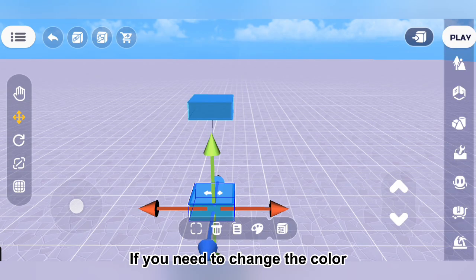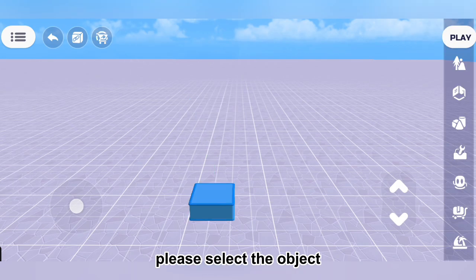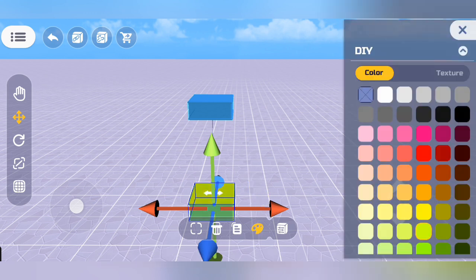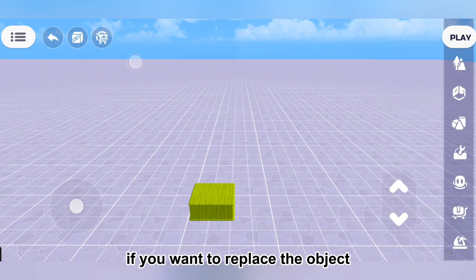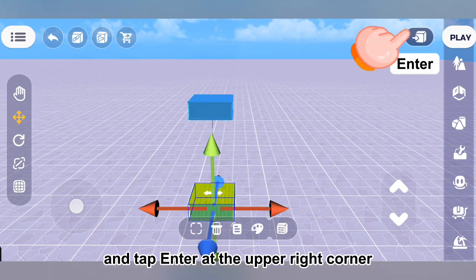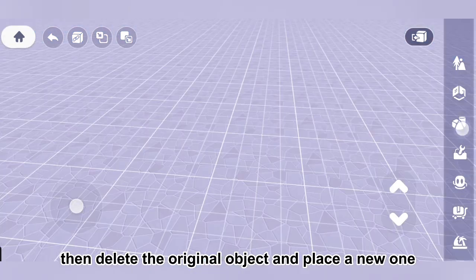If you need to change the color and texture of the object, please select the object and tap the palette icon below to choose. If you want to replace the object, please select it and tap enter at the upper right corner, then delete the original object and place a new one.